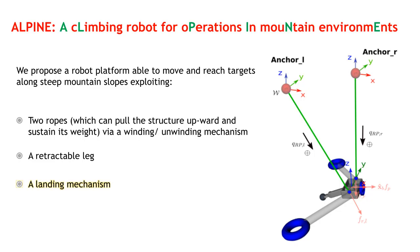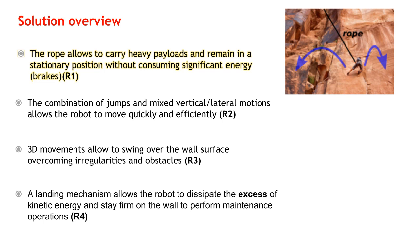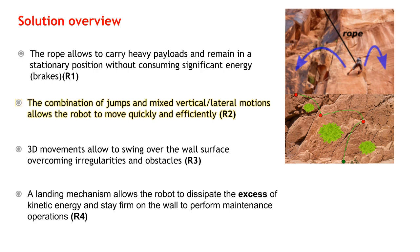Finally, a landing mechanism allows the robot to land. Contrary to flying vehicles, the ropes allow carrying heavy payloads and being stationary on the wall without energy consumption by engaging brakes. The combination of mixed vertical and lateral motions allows the robot to move quickly and efficiently. 3D movements allow swinging over the wall surface, overcoming obstacles.